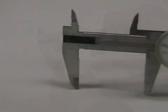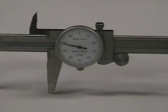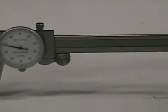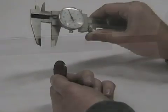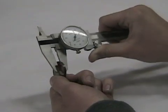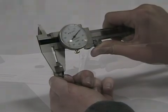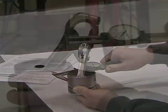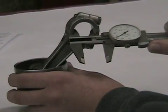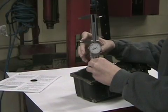The dial caliper can be used to make inside, outside, and depth measurements. They are not as accurate as the micrometer and are used to make measurements requiring a tolerance of less than two-thousandths of an inch or 0.05 millimeters. Mechanics use them to make float height adjustments or measure shims. The inside of the lower jaws can be used to make outside measurements. The outside of the jaws can be used to make inside measurements. And the end of the caliper can be used to make depth measurements.